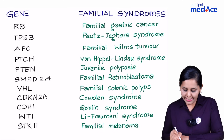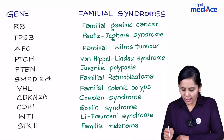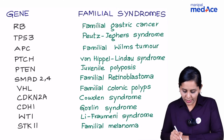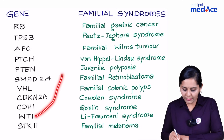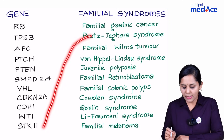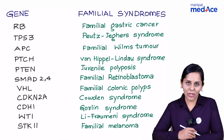Cyclin-dependent kinase inhibitor 2A is associated with familial melanoma. CDH1 loss is associated with familial gastric cancer. WT1 is associated with familial Wilms tumor. And lastly, STK11 is associated with Peutz-Jeghers syndrome. All these are very, very important.